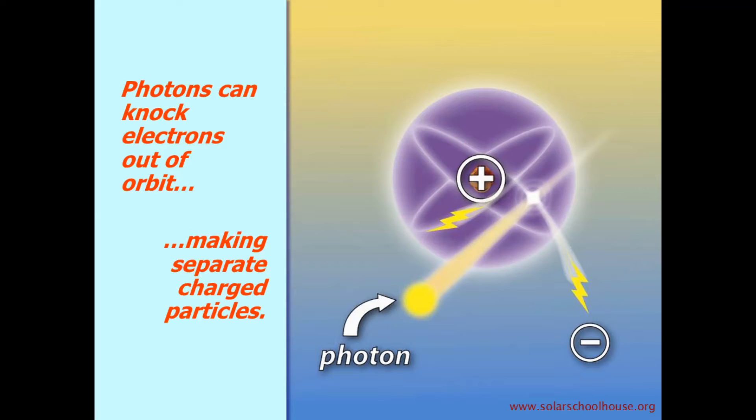Now, we have two free charged particles, the negatively charged electron and the positively charged nucleus. Because positive and negative electric charges are attracted to each other, they'll try to recombine to make a neutral atom.